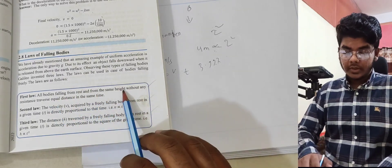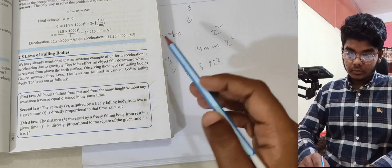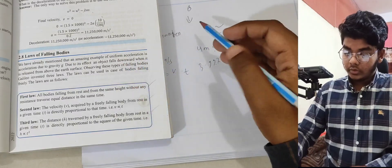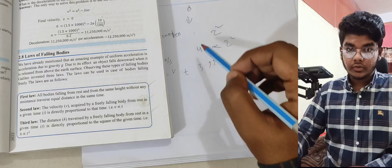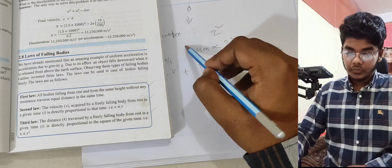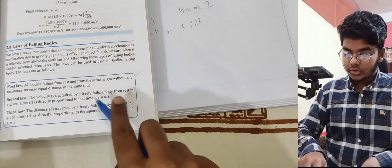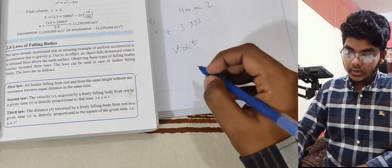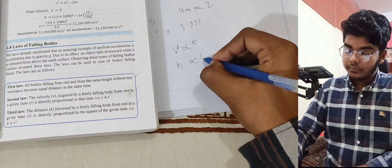Summary of the three laws: First law — all bodies falling from rest from the same height without any resistance traverse equal distance in the same time. Second law — velocity is proportional to time. Third law — distance is proportional to time squared.